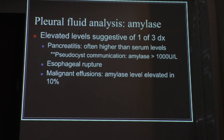Boerhaave syndrome is the esophageal rupture syndrome. The risk factor for developing it is forceful vomiting — it could be from alcoholism or bulimia. It's extremely painful and is one of the differentials for severe chest pain, along with dissection and pulmonary embolism. That's why you ask the patient about any GI symptoms every time they present with chest pain.